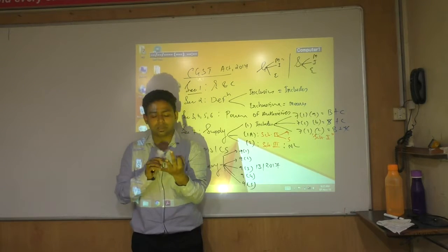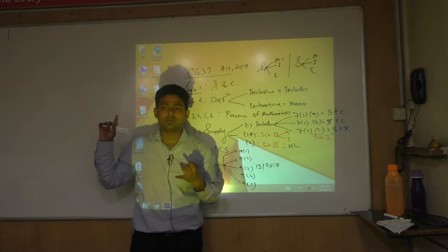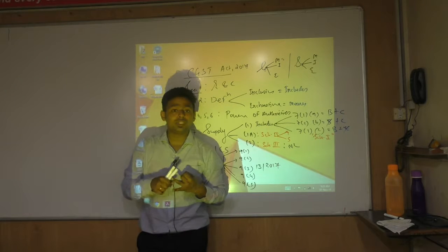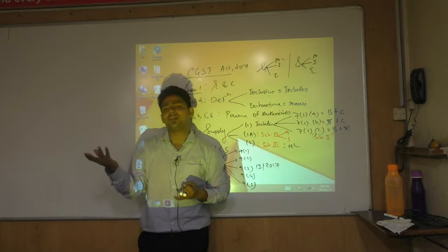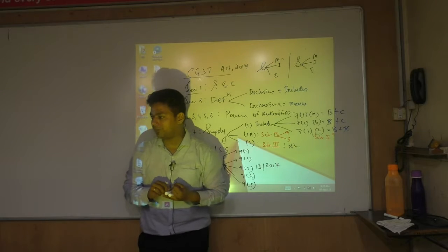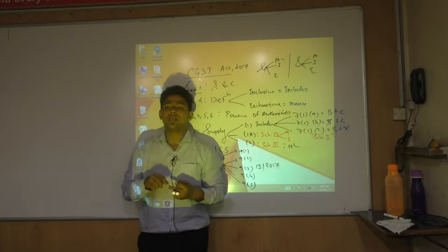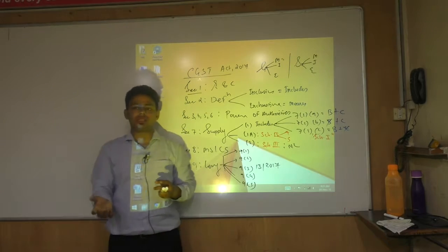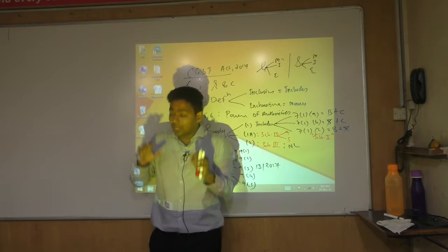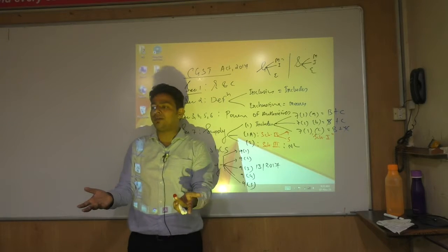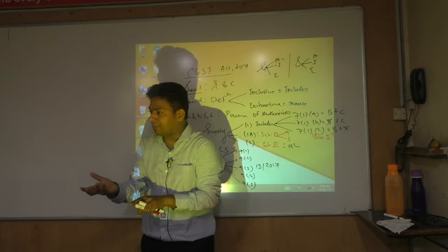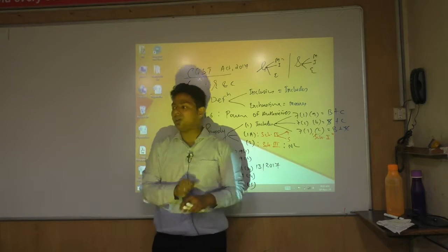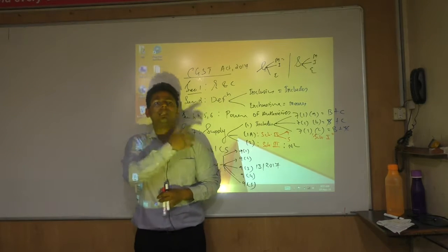The three services under section 9.5 are: first, passenger transportation by motor cab — examples include Ola and Uber; second, hotel accommodation through e-commerce operator — if the hotel is registered, hotel pays tax; if unregistered, e-commerce operator pays; third, housekeeping services like security and cleaning — if supplier is registered, supplier pays; if unregistered, e-commerce operator pays. If e-commerce operator has physical presence in India, they pay. If not, their representative pays. If neither, a person appointed by the e-commerce operator handles tax compliance.